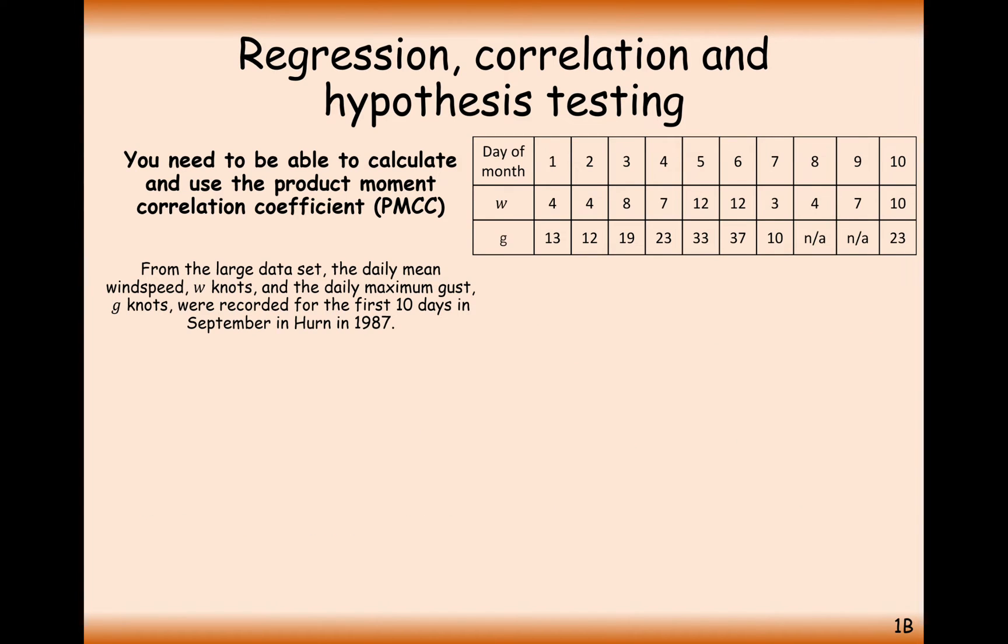Let's see how we can use this in a question and how we might work out the product moment correlation coefficient. From the large data set, we have the daily mean wind speed W and the daily maximum gust G recorded for the first days in September in Hearn 1987. States the meaning of N-A in the table - classic large data set question. N-A represents that no data is available on those days, that measuring instruments didn't work or somehow no data was recorded on that day.